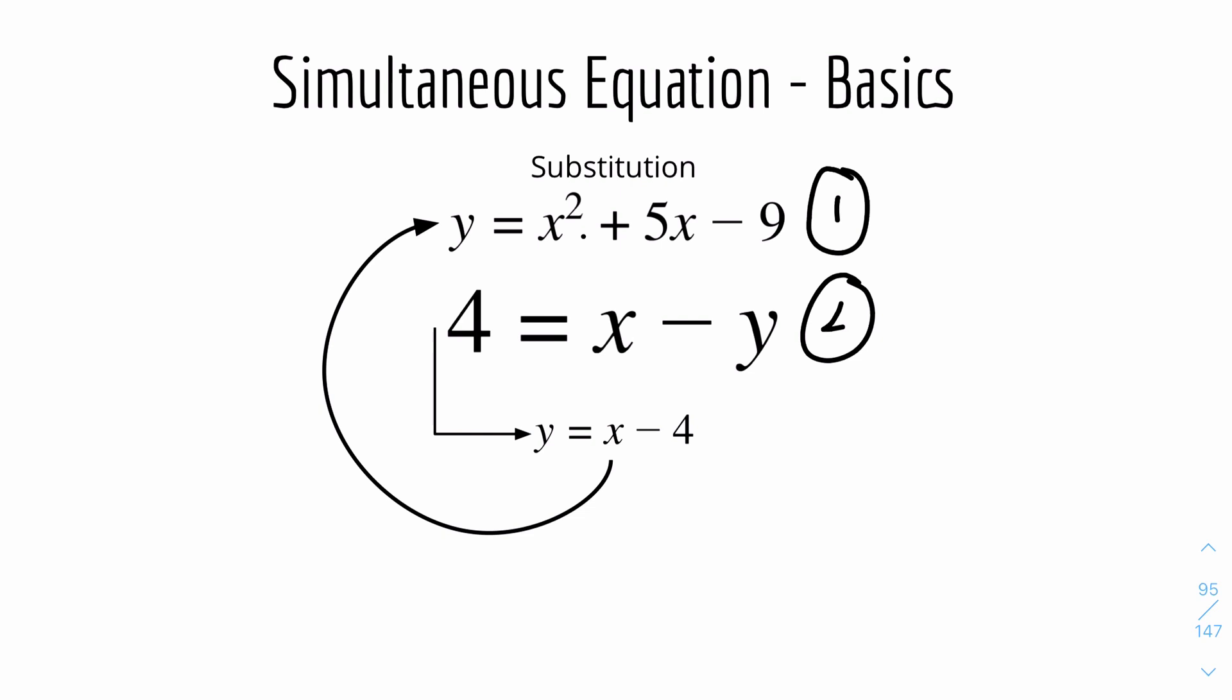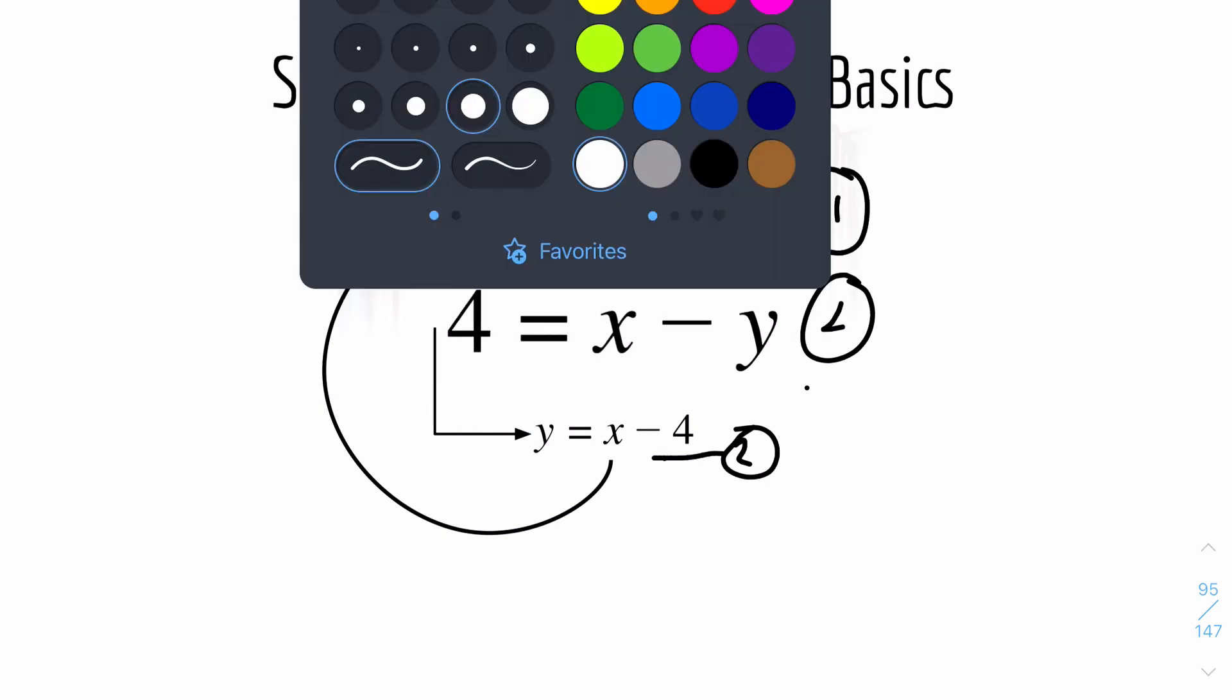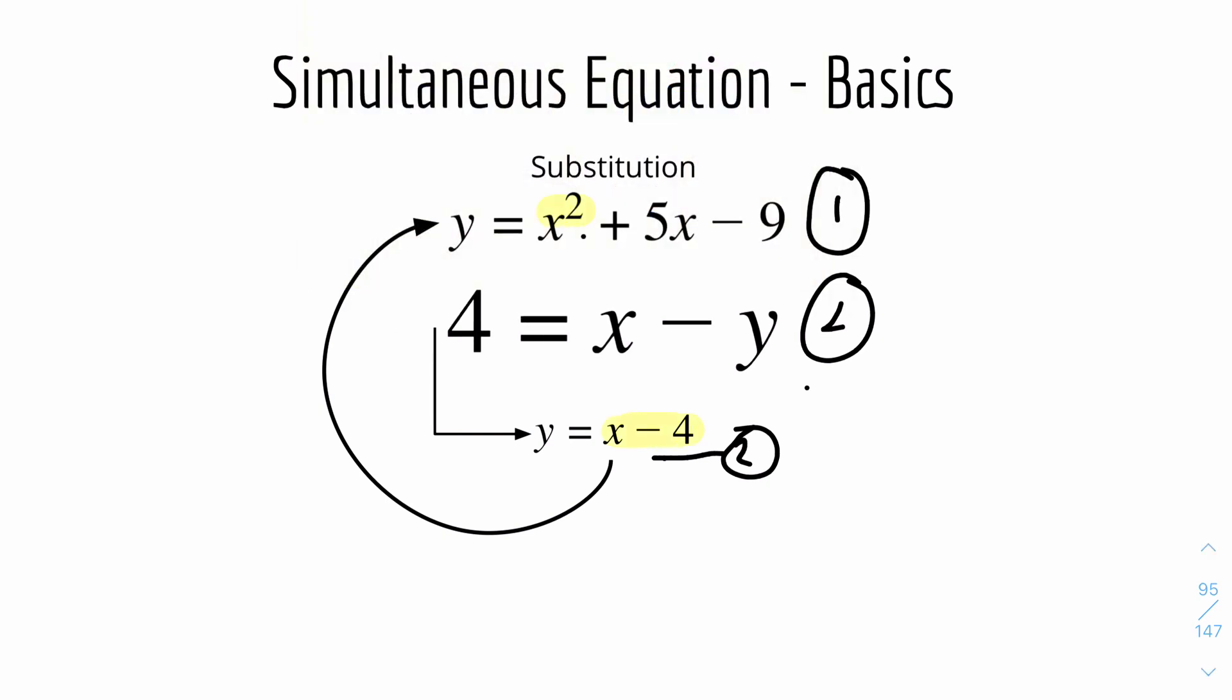So what I can do is rearrange the second equation to get y as the subject. So I will rearrange 4 equals x minus y to y equals x minus 4. Once I have y in terms of x for the second equation, and the first equation is also in terms of y, I can equate x minus 4 equals x squared plus 5x minus 9. I will have two values of x, and you can find the consequent y values for both values of x.